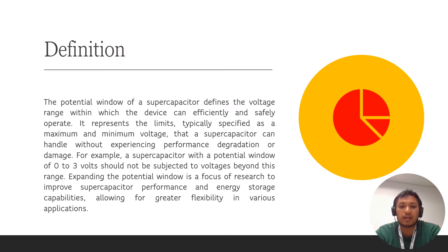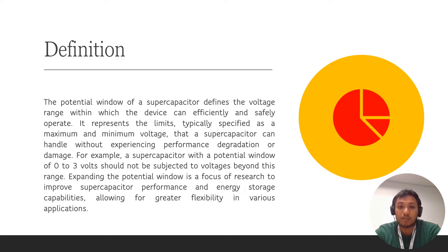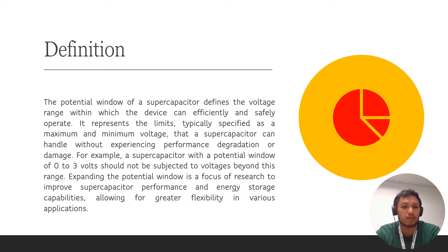Upon the definition: the potential window of a supercapacitor device is the voltage range within which the device can effectively and safely operate. It represents the limits — the maximum and minimum voltage — that your device can actually achieve. In your case, from 0.4 to 1.2 volts, your minimum is 0.4 volts and your maximum is 1.2 volts.